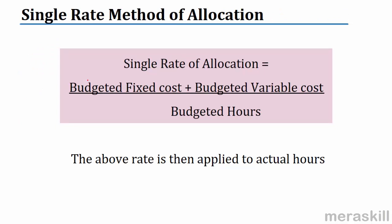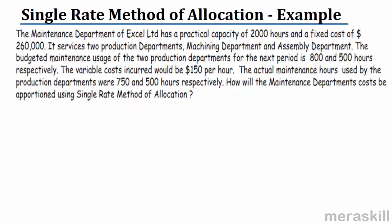Single rate method of allocation: budgeted fixed cost plus the budgeted variable cost divided by the budgeted hours gives you one rate. You find out what is the cost, total it up — total budgeted variable cost plus budgeted fixed cost — divide it, you get the rate per hour. Then whatever is the actual hours, you apply it to the actual hours. This is what is called normal costing, where we take a budgeted rate and apply it to the actual hours.